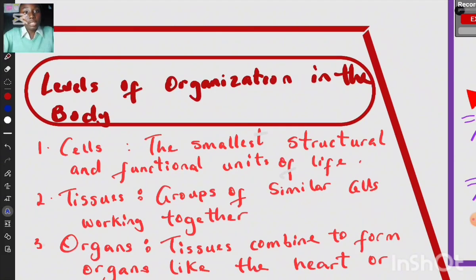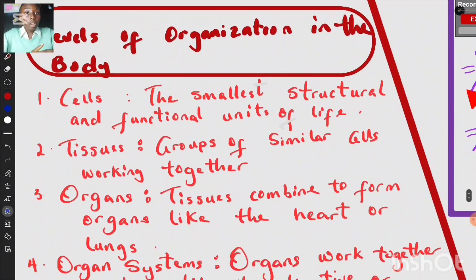Levels of organization in the body: First, we have cells — these are the smallest structural and functional units of life. The cell is the building block of life. The second level is tissues — these are groups of similar cells working together.